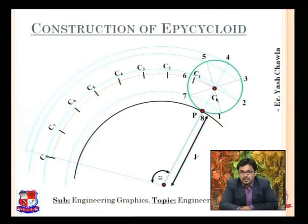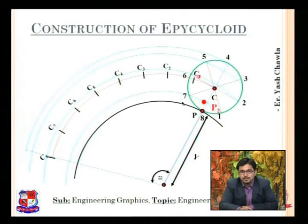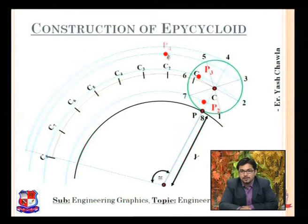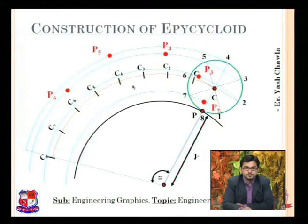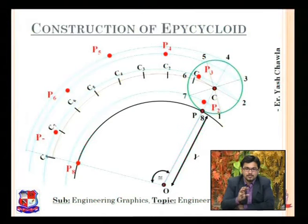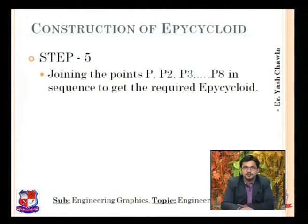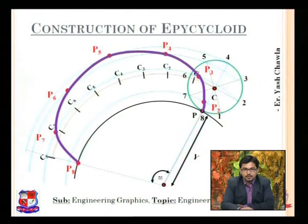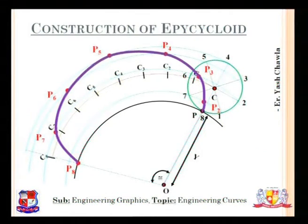With radius equal to CP0 and center C1, cut an arc passing through line 1, then repeat for all points. Taking C1 center, cut arc to P1; with C2 cut arc to P2; the radius remains equal to CP0 throughout. P3, P4, P5, P6, P7, and P8 all appear this way. Join all these points to get the required epicycloid. Try to make the curve as smooth as possible — the smoother the curve, the more marks the examiner will give you.